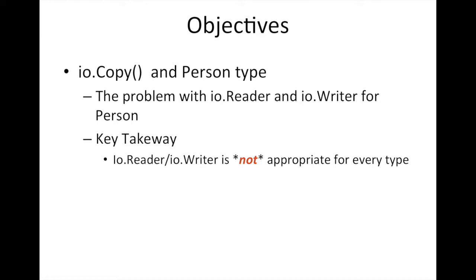Now that we've been using IOCopy successfully with memfile — where our memstore operates like a file — we can imagine copying one file to another. The thing we want to look at today is: can we use IOCopy with our person data type, even though we've implemented IOReader and IOWriter for it? I'm telling you up front so you know what to look forward to: there's going to be a problem with how we've implemented it.